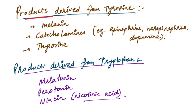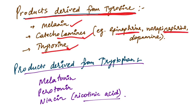Products derived from tyrosine include melanin, catecholamines, and thyroxine. Catecholamines like epinephrine, norepinephrine, and dopamine are all derived from tyrosine. These can be framed in different ways in exams.